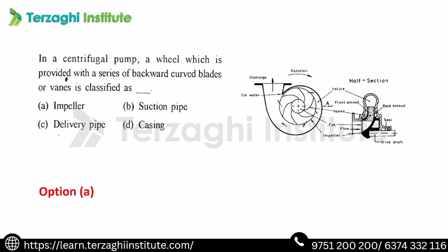In a centrifugal pump, a wheel which is provided with a series of backward curved blades is called the impeller. In a centrifugal pump, a wheel is called the impeller. The suction pump, casing, and delivery pipeline is called the device — you can use the suction pump and the casing.